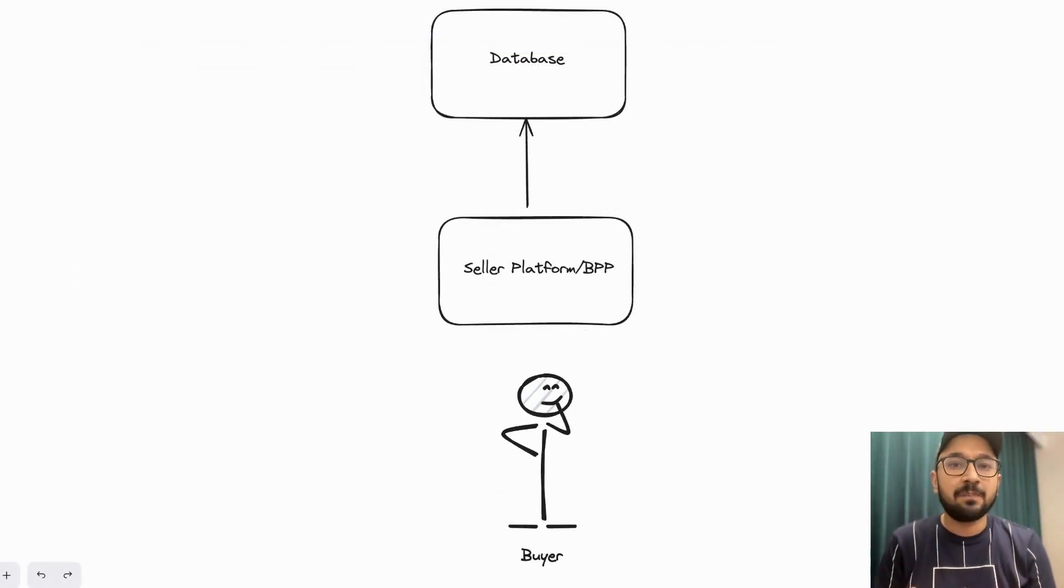Till now, anyone willing to be a buyer or a seller has registered on the Beckon network. What next? Next comes the seller platform. A seller is someone selling a product in a particular area, or some aggregation platform like Paytm or Amazon, which is giving an option to the seller to put his product online. Given this is a tech platform, BPP will have its database where the inventory and catalog will be managed.